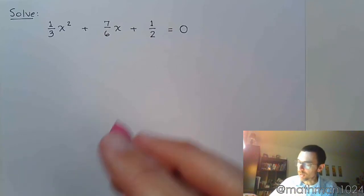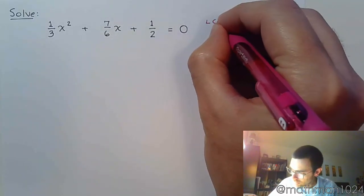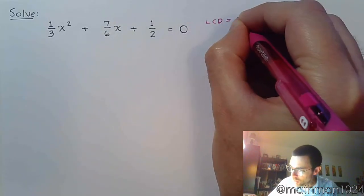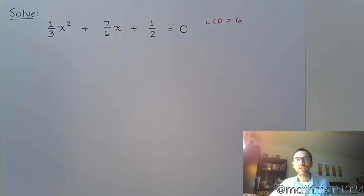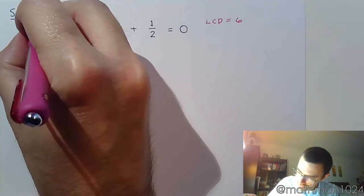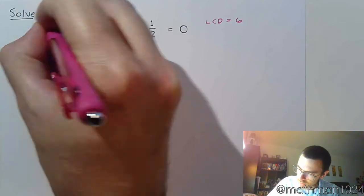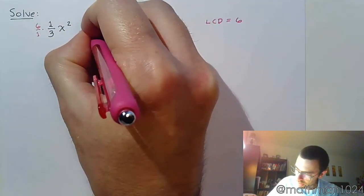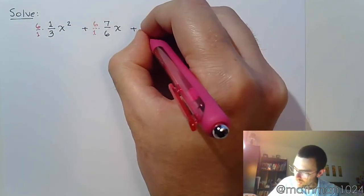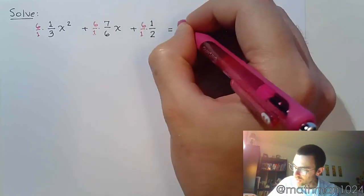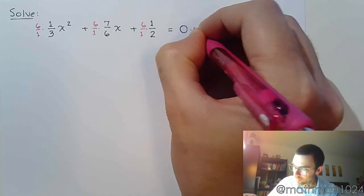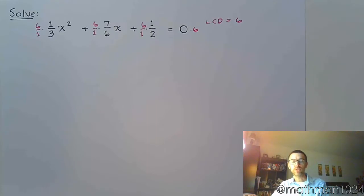So here in this problem, your common denominator is 6. So what I can do is I can multiply each of these fractions by 6 over 1. And as long as 6 really is a common denominator, I won't have any fractions left when it's all said and done.